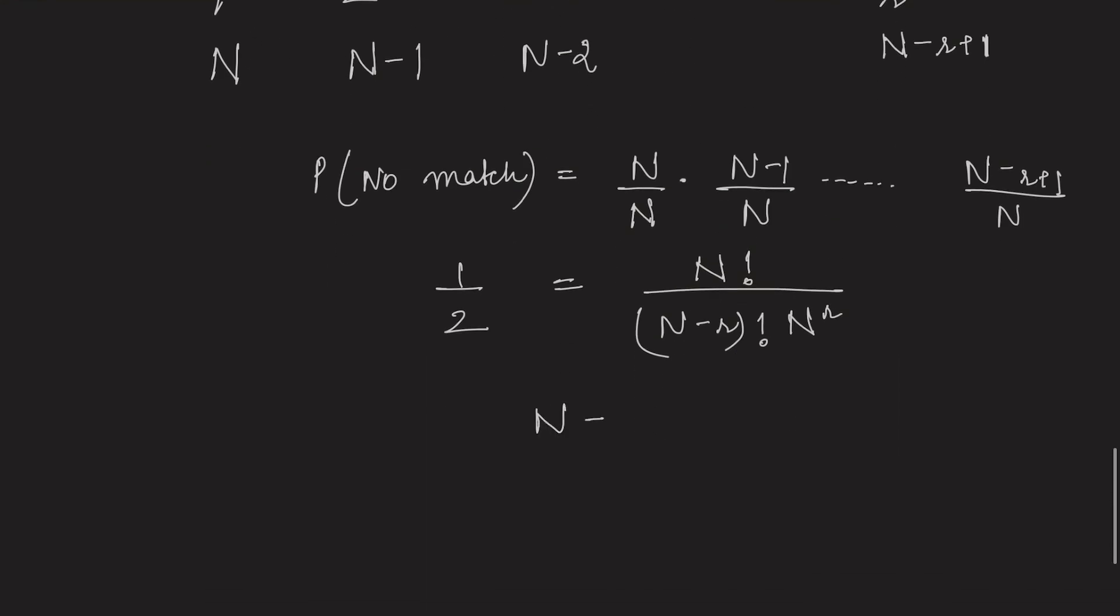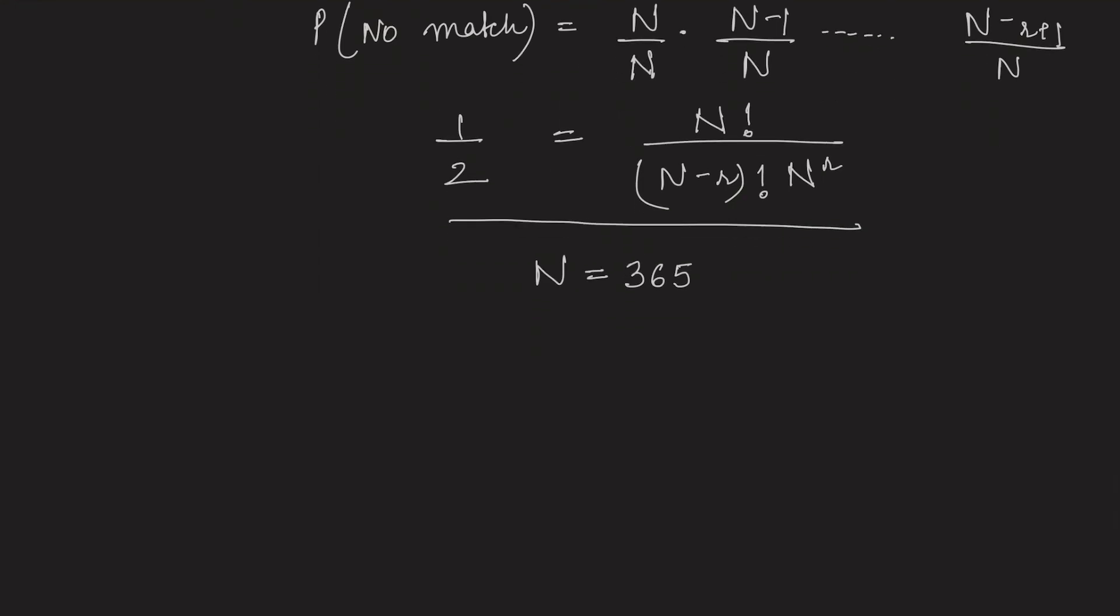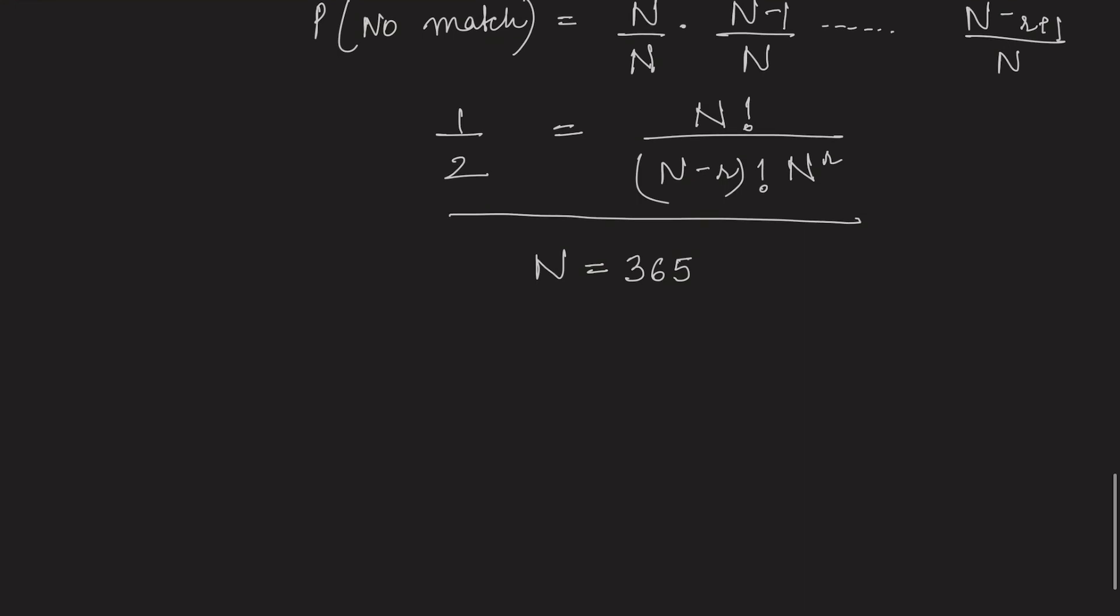Now, for n equals to 365, that is a normal year with 365 days, it is a little difficult to solve r from this equation. So, what we will try is to first find the range of r and then we can use some approximation.